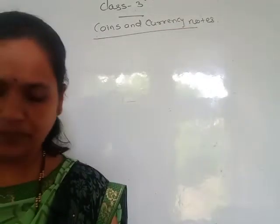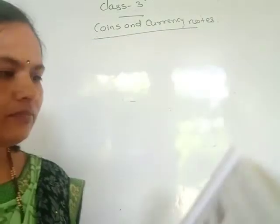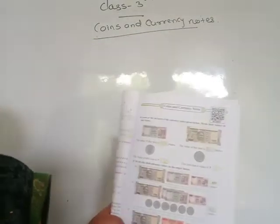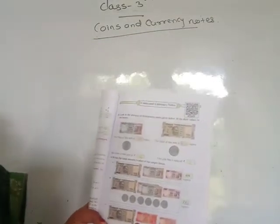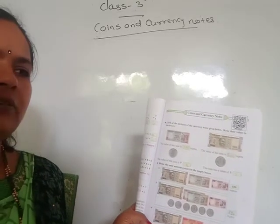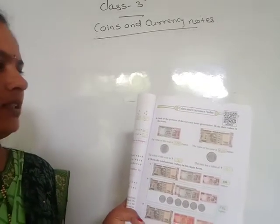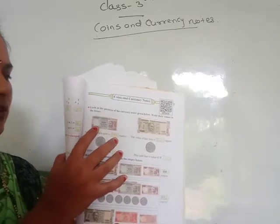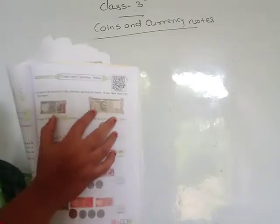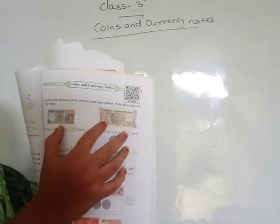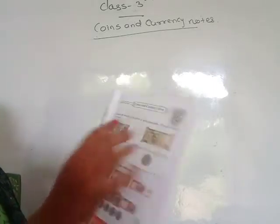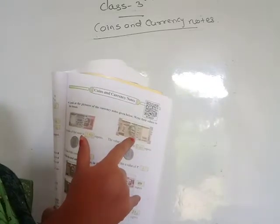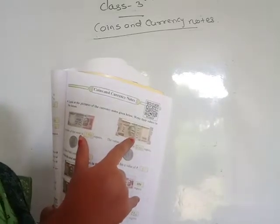See in your textbook this page number 33. Look at the picture of these currency notes given below and write their values in the boxes. Here the first note is 100 rupees and the second note is 500 rupees. The value of the first note is 100 rupees and the value of the second note is 500 rupees.